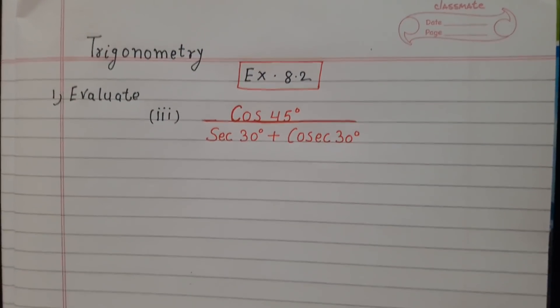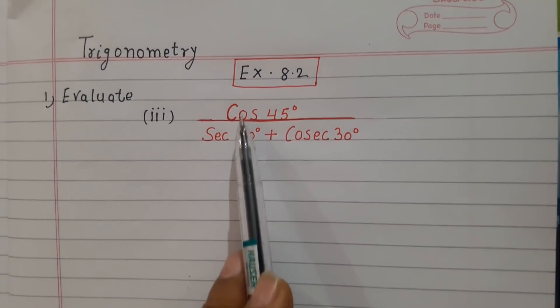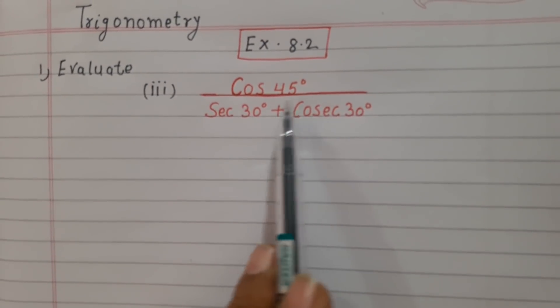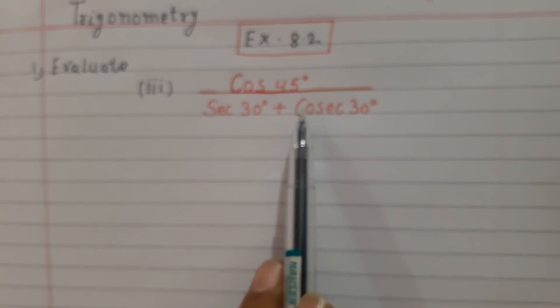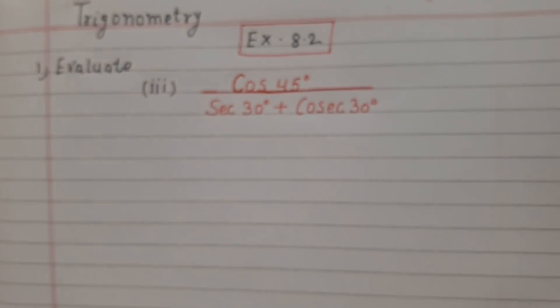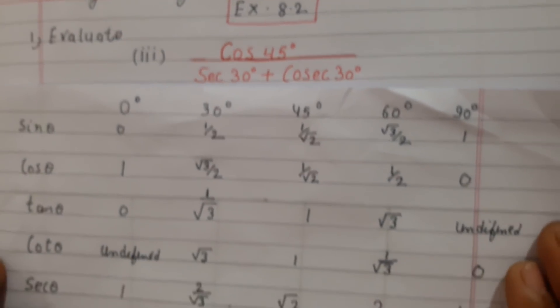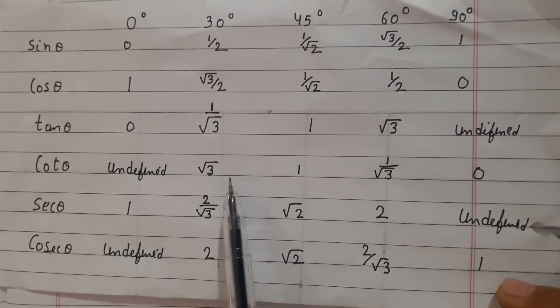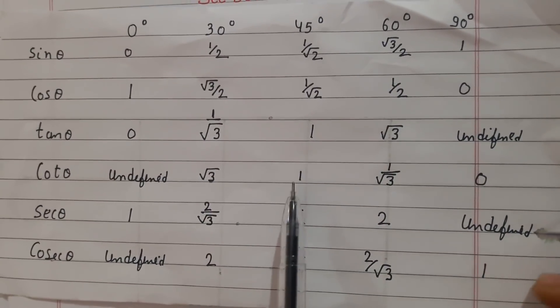Before solving the question, you have to write these three values from the trigonometric table. In my last video, I have told you how to make this table. It is an easy method to make this table, because it is not easy to remember all these values.